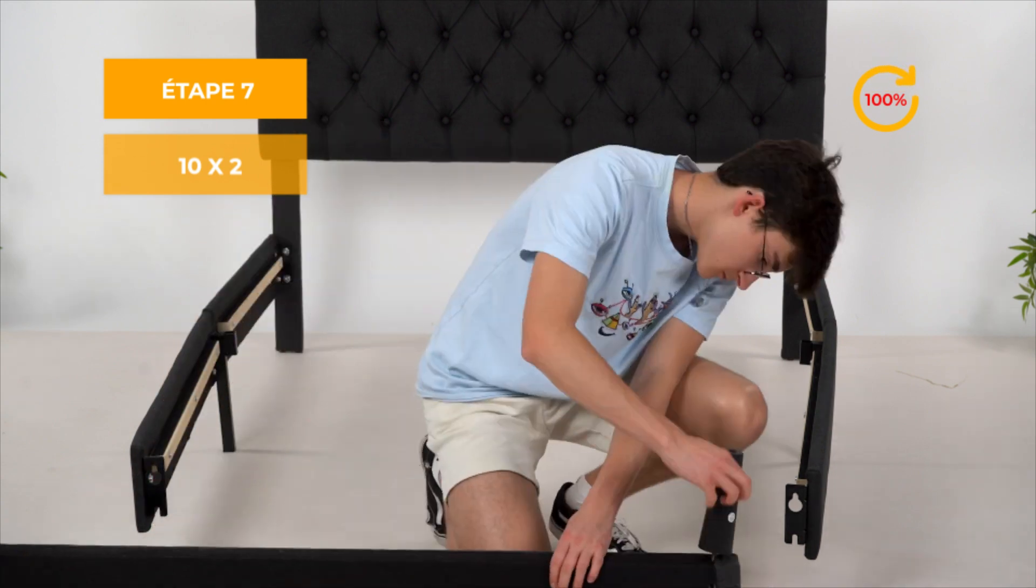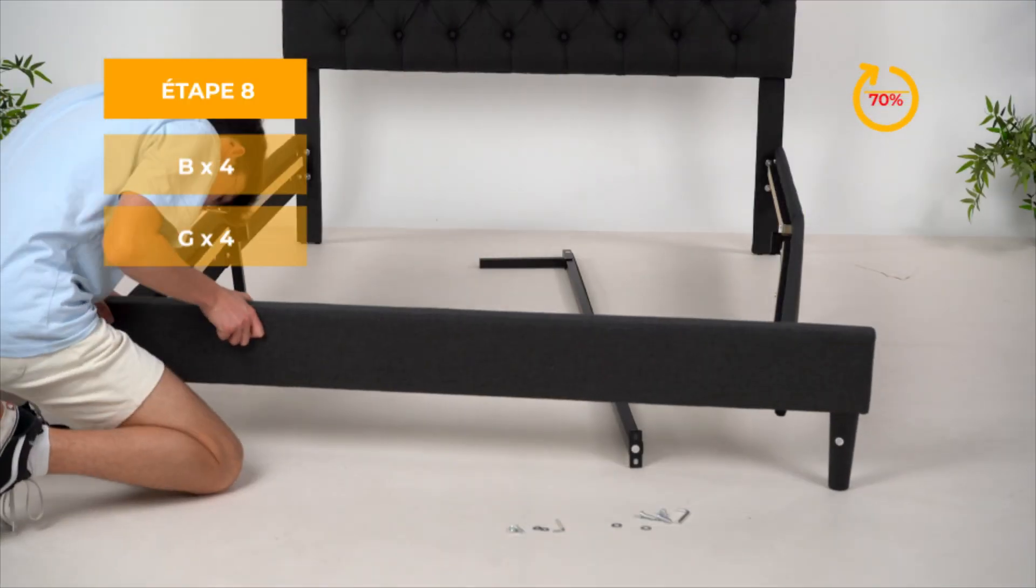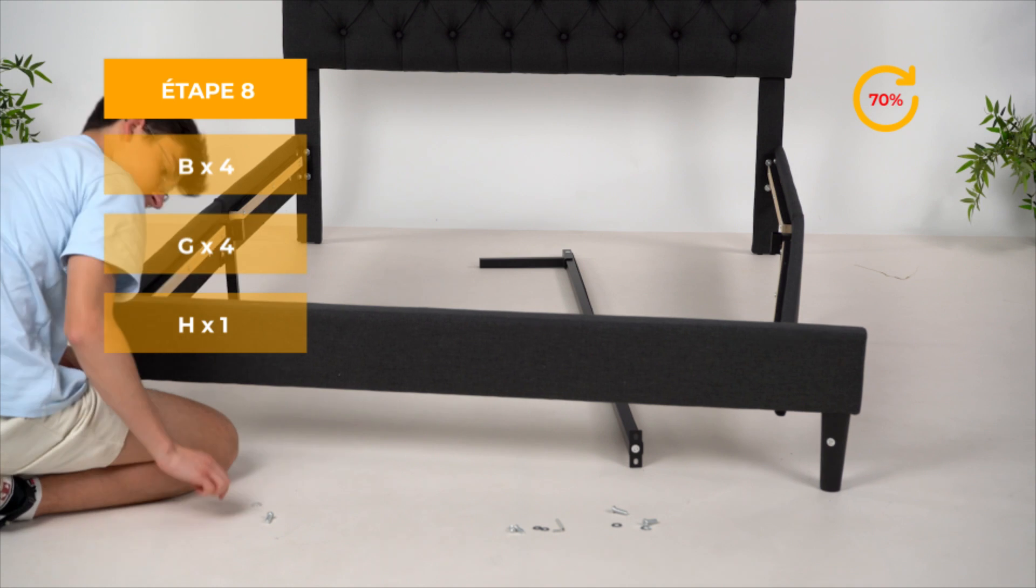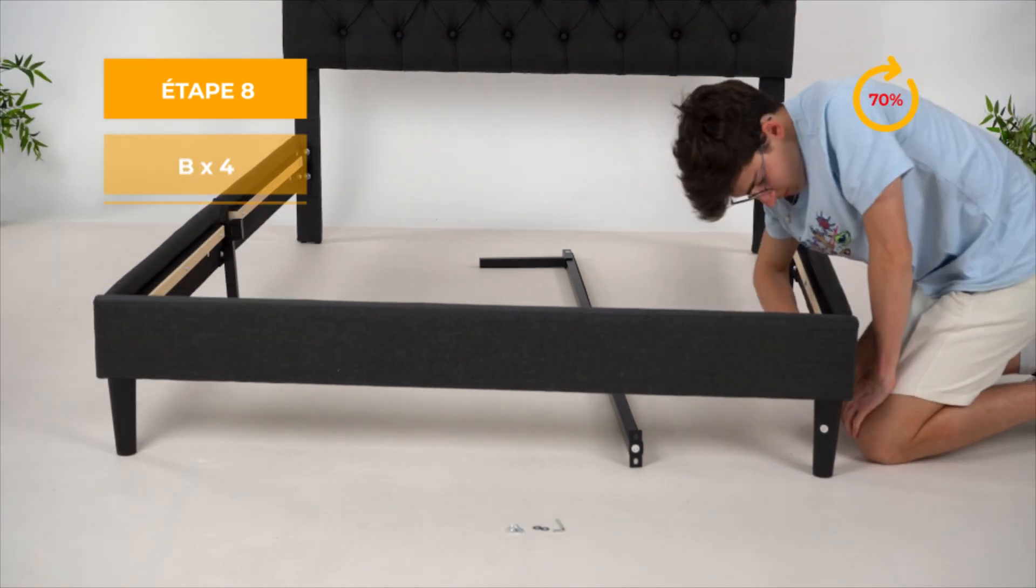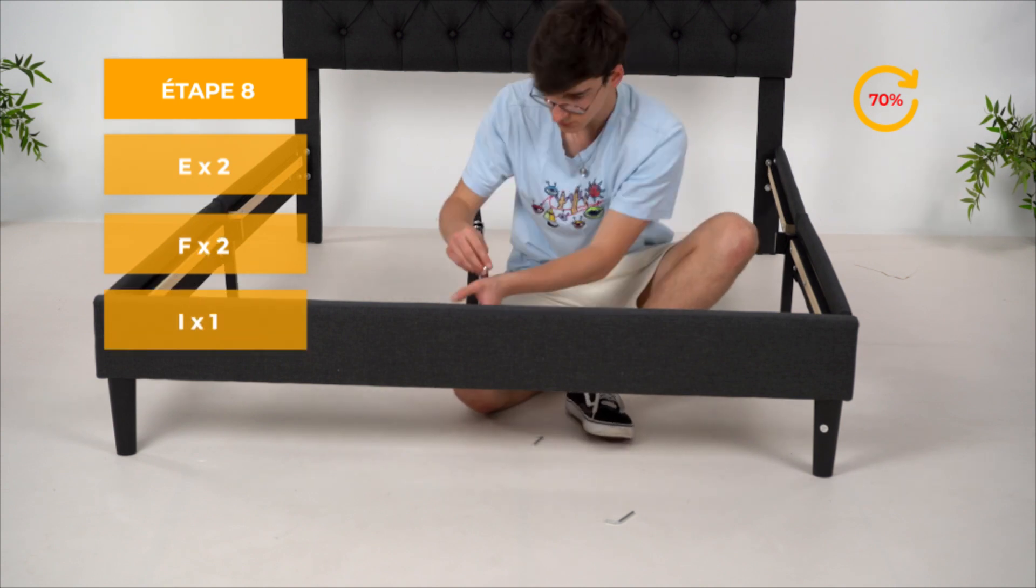Étape 7. Assemblez les pieds du lit. Placez le bas du lit en vissant dans un premier temps les pièces sur le côté, puis finissez avec la pièce du milieu. Vissez à 70%.